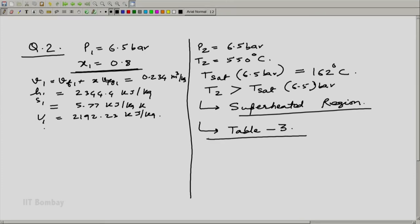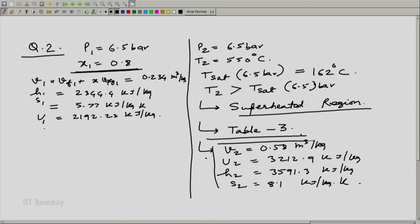And get the values from table 3. At 550 degree centigrade, again you may require to do interpolation. I will not show table 3 values here, but from here what we get is v2 is equal to 0.58 meter cube per kg, u2 is equal to 3212.9 kilojoule per kg, h2 is equal to 3591.3 kilojoule per kg, and s2 is equal to 8.1 kilojoule per kg Kelvin. This is what is going to be 0.2.